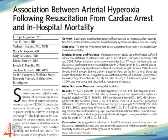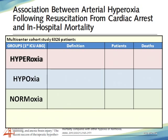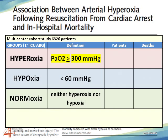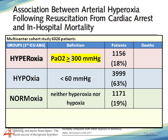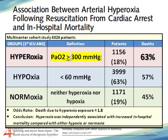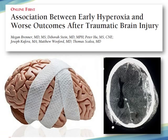Here's one article that talks about the patient who has survived cardiac arrest, looking at their oxygenation. In this study of almost 6,500 patients, they split patients into three groups depending on what their PaO2 was when they got that first ABG in the ICU. The hyperoxia group — defined as a PaO2 greater than 300 — and hypoxia was less than 60. In the almost 1,200 patients in the hyperoxia group, 63% of them died. They concluded that hyperoxia alone caused almost a two-fold increase in death, and was independently associated with increased in-hospital mortality compared to the other two groups.